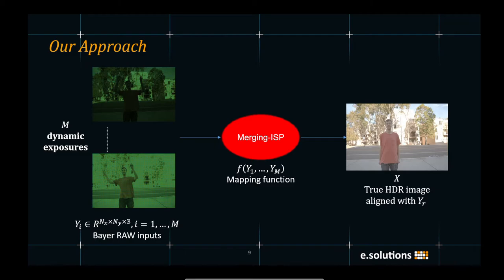We introduce our approach to solve the multi-exposure HDR imaging. It takes M dynamic exposure images YI with the resolution of NX by NY by 3. The transformation is achieved by learning a mapping function from raw inputs to a true target HDR image X that is aligned to the reference exposure.